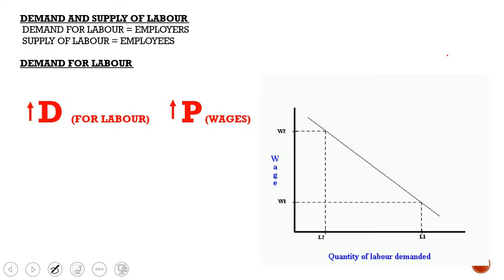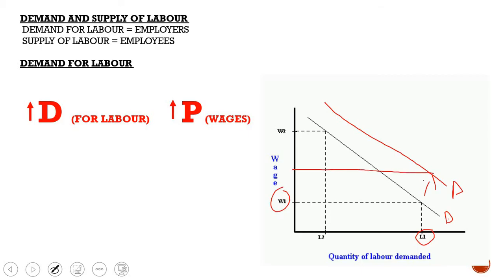This has to do with the shift of your curves. If this is your original demand with W1 and L1 as your original wage and labor quantity, if demand increases your demand curve is going to shift up to D1. So your wage is going to increase as well as the quantity of your labor demanded — if demand increases, your wage will increase.